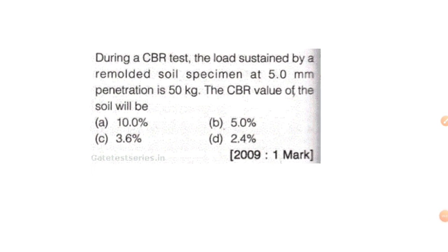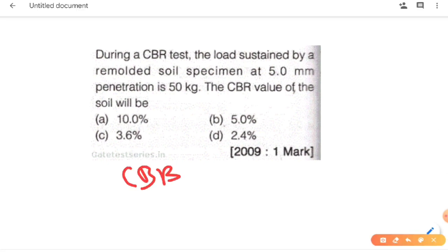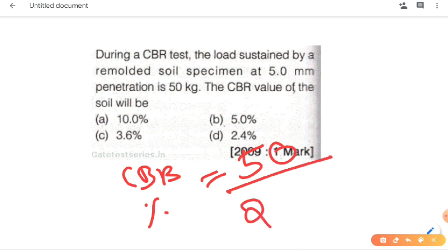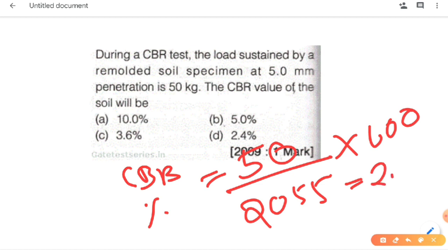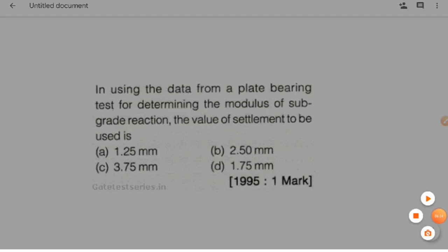Next CBR question: during a CBR test, the load sustained by a remoulded soil specimen at 5 mm penetration is 50 kg. The CBR percentage is calculated as: 50 / 1370 × 100 (since the standard value at 5 mm is 1370 kg, and at 2.5 mm is 2055 kg). The answer is approximately 2.4%.